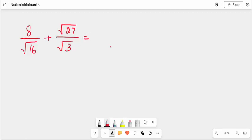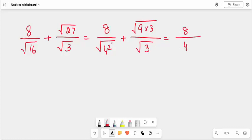First of all, 8 divided by 16 can be written as this, plus 27 is 9 times 3 over 3. Now 8 divided by 4 square root will cancel with this, plus you can write square root 3 here, 9 in square root.